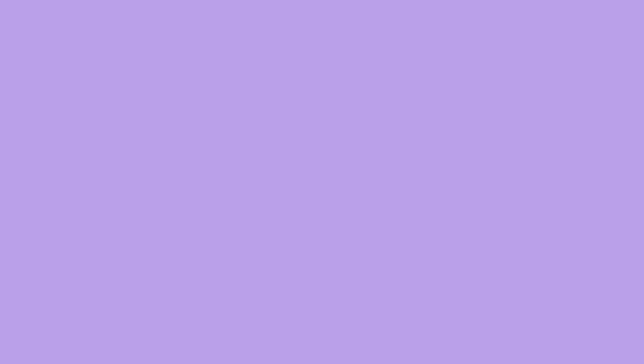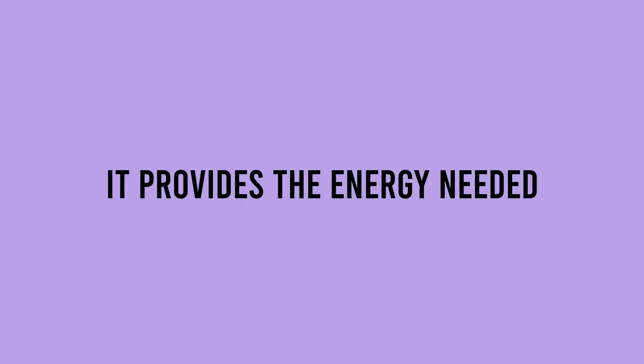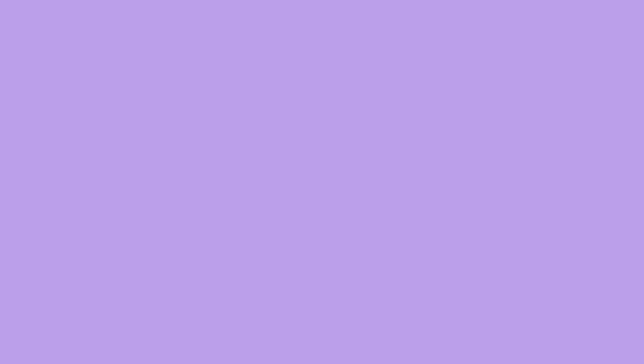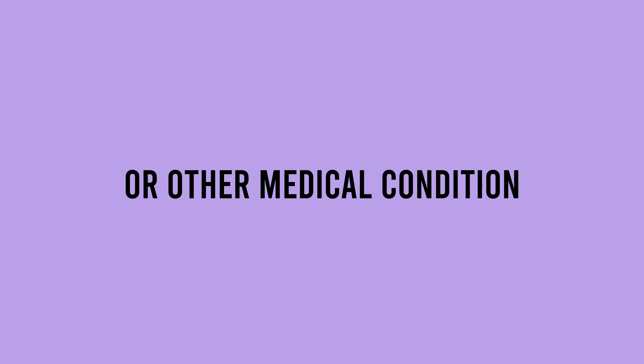Glucose is one of the body's preferred sources of food in the form of carbohydrates. It provides the energy needed by all cells and organs in the body, and is used to provide carbohydrate calories to a person who cannot eat due to trauma or other medical condition.